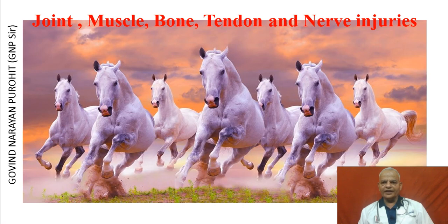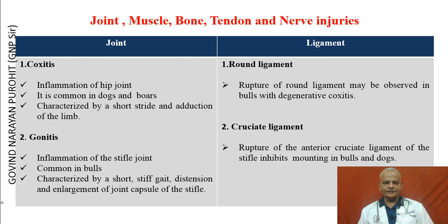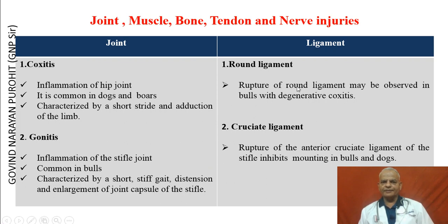Joint, muscle, tendon, bone and nerve injuries can result in lack of sexual desire in males. Joint problems such as coxitis or gonitis can result in low sexual desire and poor ability to mate. Coxitis is inflammation of the hip joint, common in dogs and boars, characterized by short stride and adduction of the limbs. Gonitis is inflammation of the stifle joint, common in bulls, characterized by short stiff gait and distension of the joint capsule. Rupture of the round ligament may be observed in bulls with degenerative coxitis, and rupture of the anterior cruciate ligament of the stifle inhibits mounting in bulls and dogs.